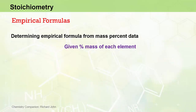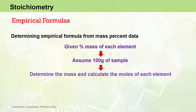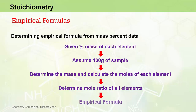To summarise: if given the percent mass of each element in a compound and asked to determine the empirical formula, start by assuming 100 grams of sample. This makes it easy to find the mass of each element, then calculate the moles of each using the molar mass equation. Divide the moles of each element by the lowest calculated mole value to get the mole ratio, and that mole ratio gives the empirical formula.